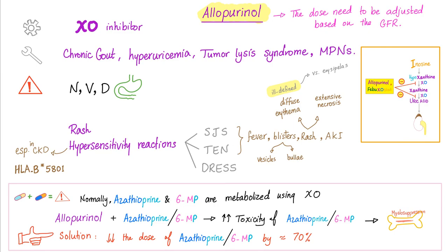Drug-drug interaction: do not give allopurinol with azathioprine or 6-mercaptopurine. If you have to, please lower the dose of azathioprine or 6-mercaptopurine. Also, if you decide to use allopurinol, you need to monitor or adjust the dose if the GFR is too low.